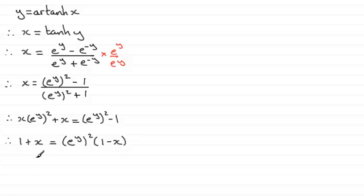And now, if I divide both sides by 1 minus x, that would give me e to the y all squared, and then take the square root of both sides. I therefore have that e to the y would be equal to plus or minus the square root then of 1 plus x all divided by 1 minus x.